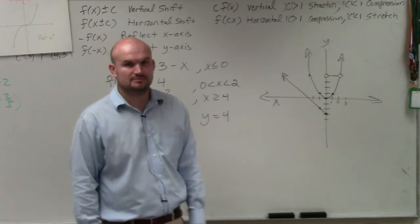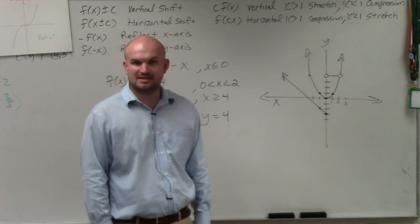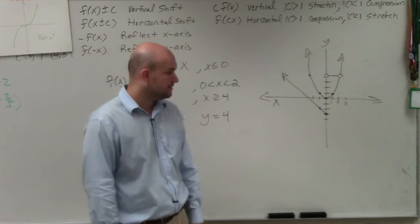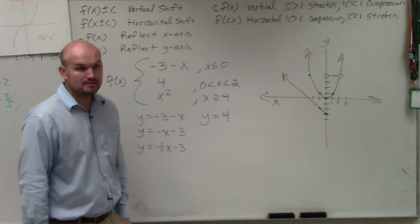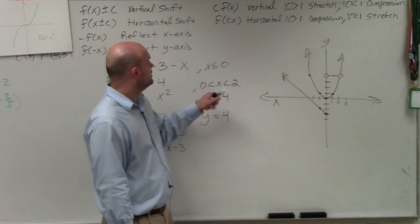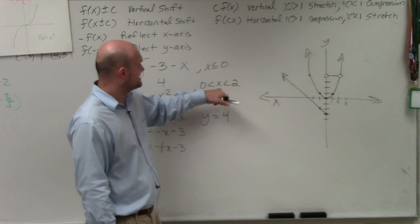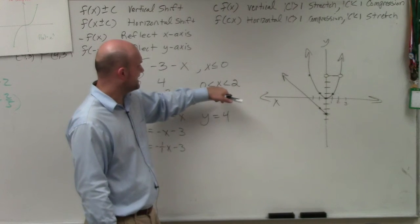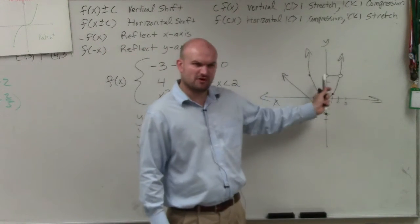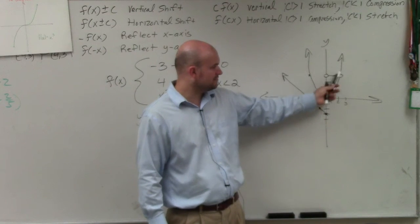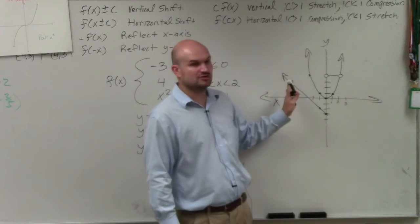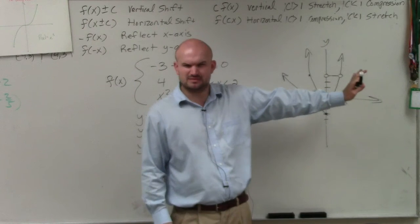Does everybody follow me? Anybody have any questions? So x is greater than 0, x is less than 2. So x represents the function, which is less than 2. So it's to the left of 2, but it's greater than 0. So it's to the right of 0. Does that make sense?